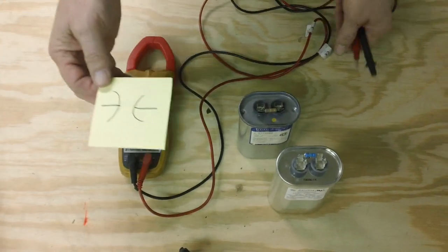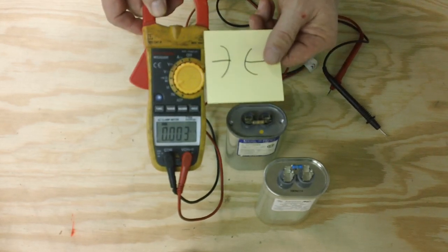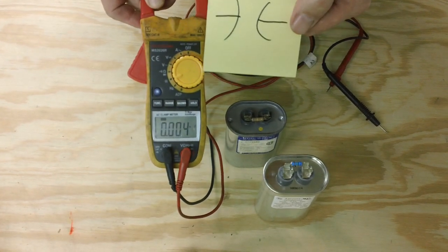Hi, in this video we're going to check for a weak capacitor. This is a digital multimeter and this is the symbol for the function of capacitance.